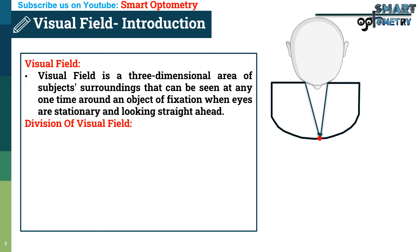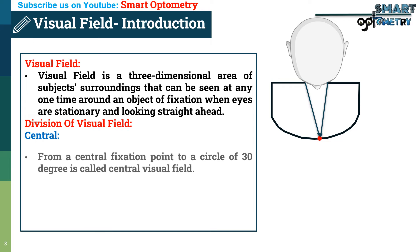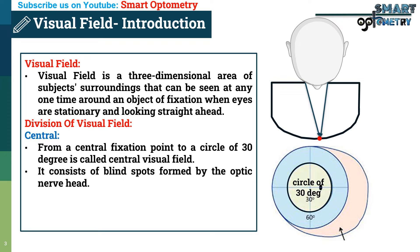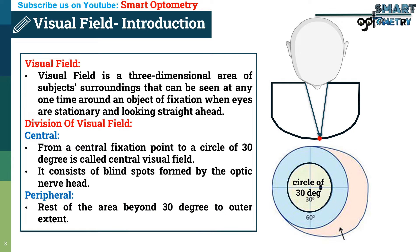Division of visual field: The visual field can be divided into two parts. Central part: From a central fixation point to a circle of 30 degrees is called the Central visual field. It consists of the blind spot formed by the optic nerve head. Peripheral visual field: The rest of the area beyond 30 degrees to the outer extent is called the Peripheral visual field.